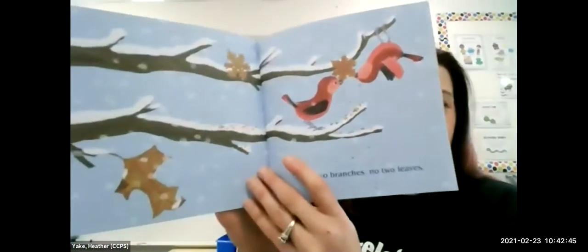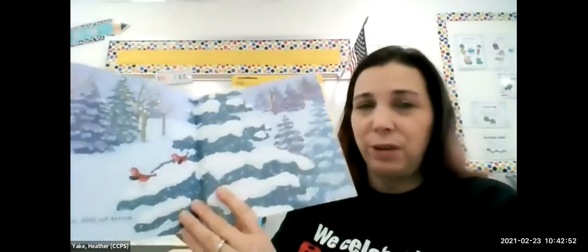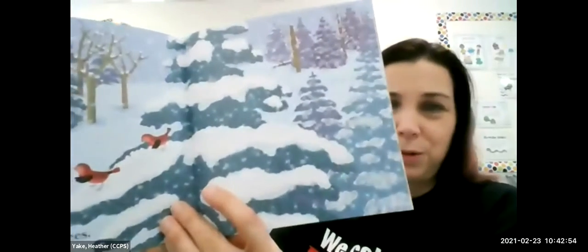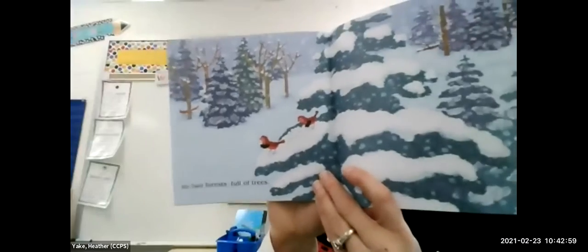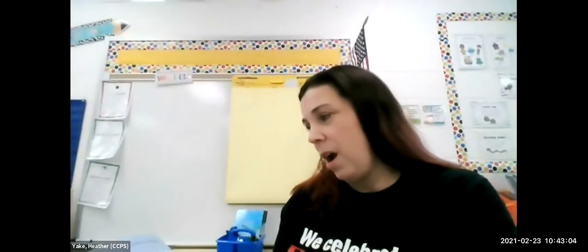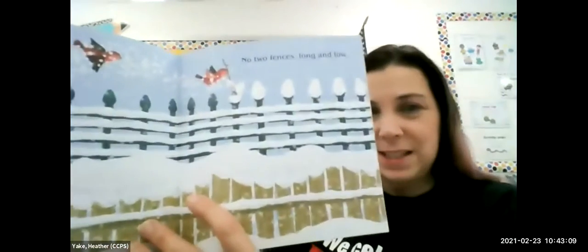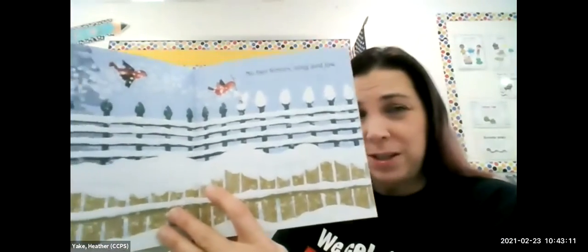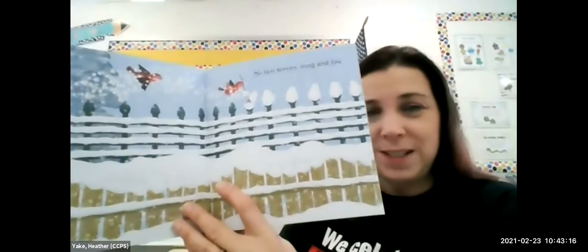No two branches, no two leaves, no two forests full of trees. Look at that beautiful winter scene — look how the trees have snow on them, but they're different kinds of trees. Some of them are bare. No two fences, long and low. Look at those fences — did you have fences with snow on them? See how the snow falls differently on those two fences?